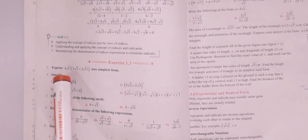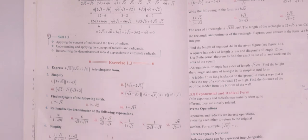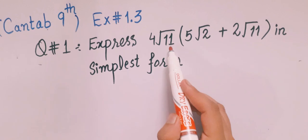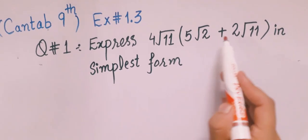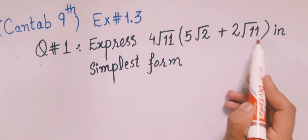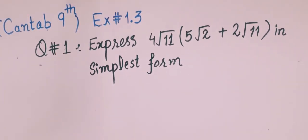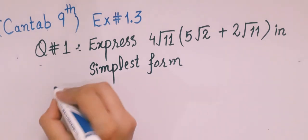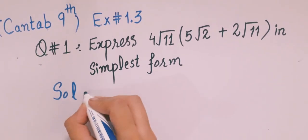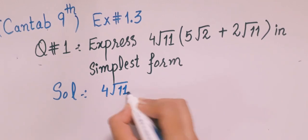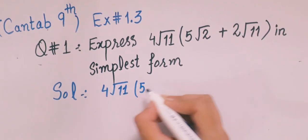So this is Exercise 1.3 and Question Number 1 is: express 4 square root 11 into 5 square root 2 plus 2 square root 11 in simplest form. We will solve this question in a very easy and simple way, so let's start the solution.